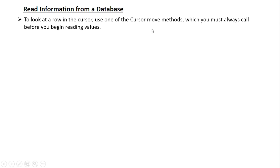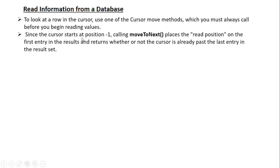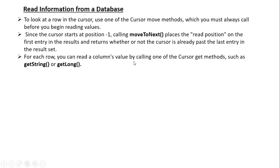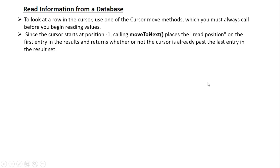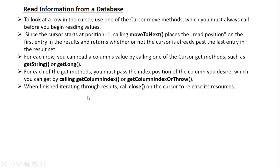To look at a row in the cursor, use one of the cursor move methods, which you must always call before you begin reading values. Since the cursor starts at position minus one, calling moveToNext places the read position on the first entry in the result and returns whether or not the cursor is already past the last entry in the result set. For each row, you can read a column value by calling one of the cursor get methods such as getString, getLong, getBoolean, etc. For each get method you must pass the index position of the column, which you can get by calling getColumnIndex or getColumnIndexOrThrow.